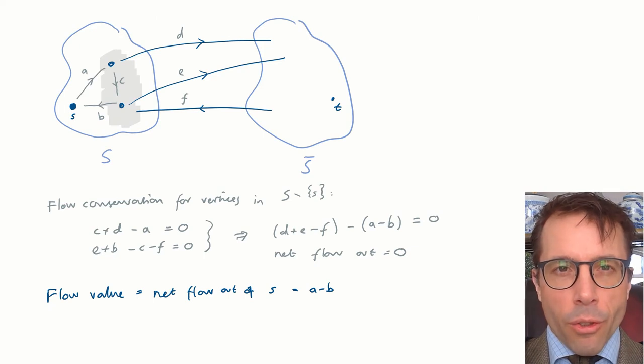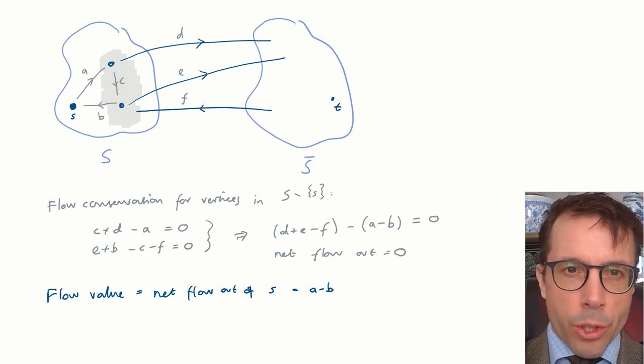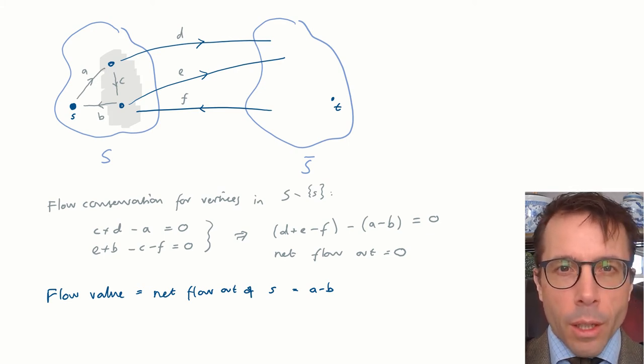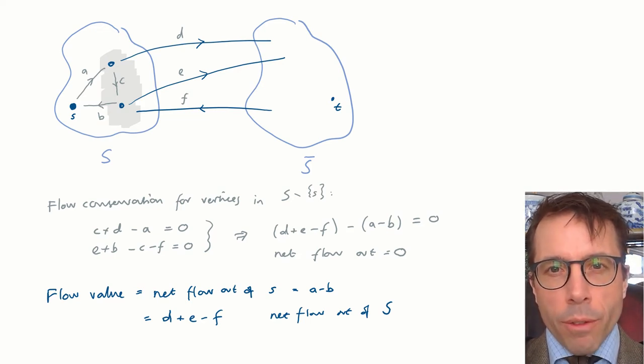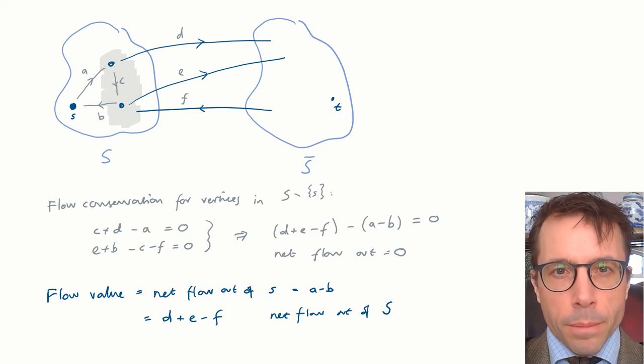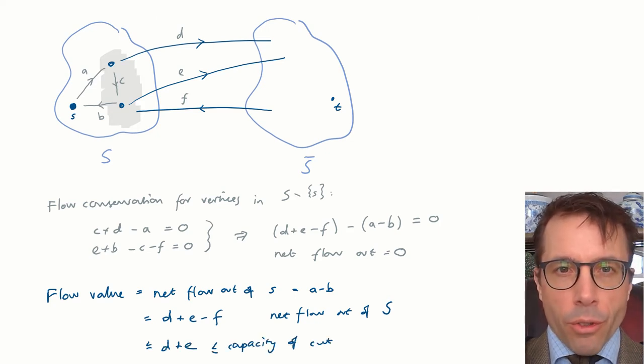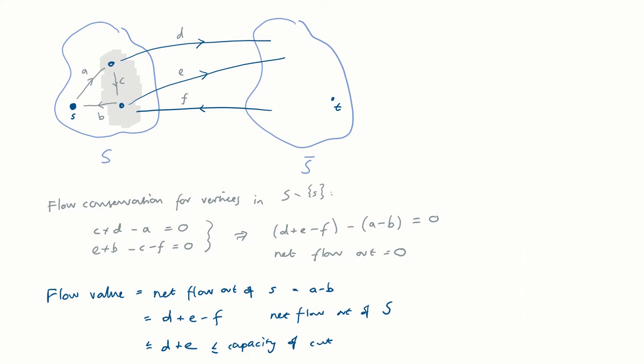Now, let's use this equation to talk about flow value. The flow value is defined to be the net flow out of the source, which in this diagram is A minus B. And the equation we just produced tells us that this is exactly equal to the net flow crossing the cut from S to S-bar. And the net flow crossing the cut is certainly less than or equal to cut capacity. Great. So that's the general spirit of the proof. I'm going to write it out now as a formal proof using symbols carefully. And the symbol pushing is all just a way to write out the argument we've made here, but with more polish and slickness.